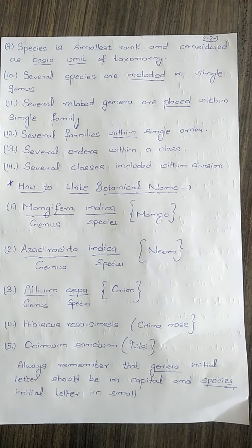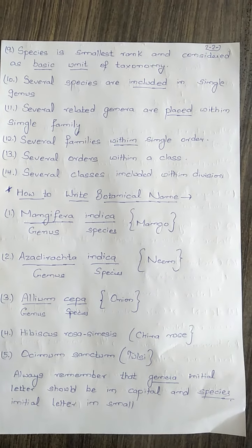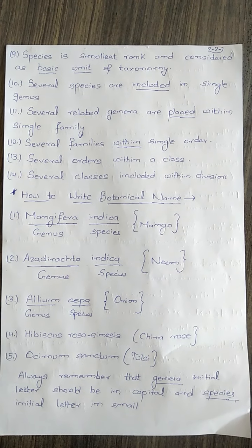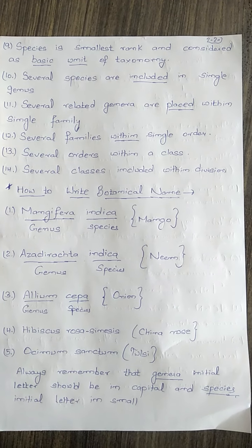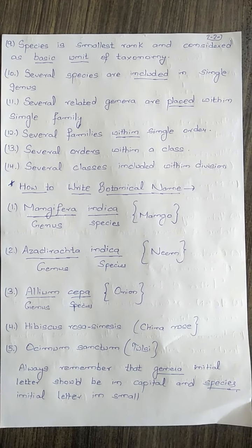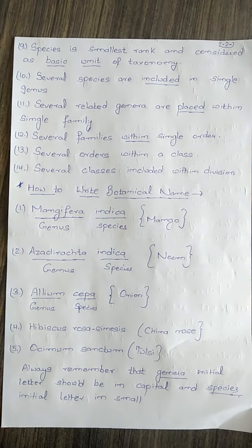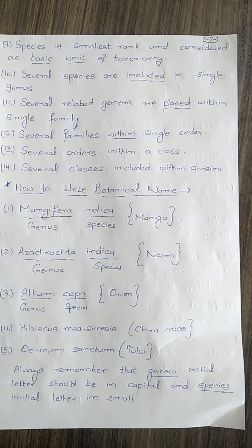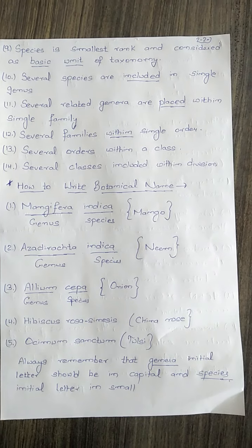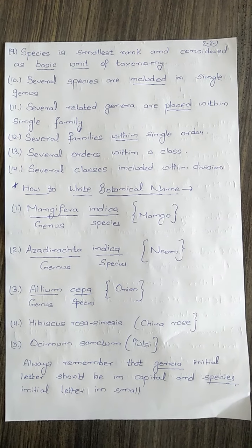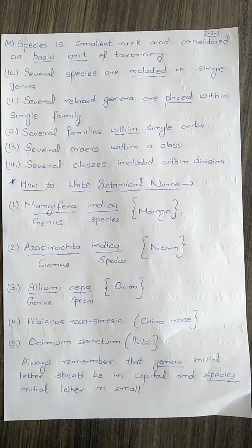Azadirachta indica is the botanical name of neem. Allium cepa is the botanical name of onion. China rose is Hibiscus rosa-sinensis. Ocimum sanctum is the botanical name of tulsi. Always remember: the genus initial letter should be capital and the species initial letter in small.